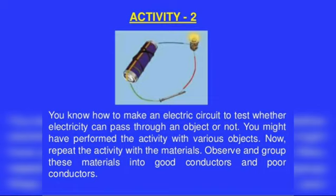Metals like sodium and potassium are soft and can be cut with a knife. Mercury is the only metal which is found in liquid state at room temperature.